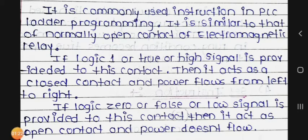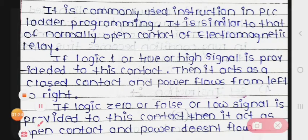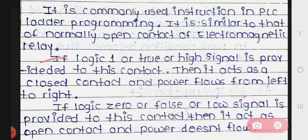If logic 1, or true, or a high signal is provided to this contact, then it acts as a closed contact and power flows from left to right.